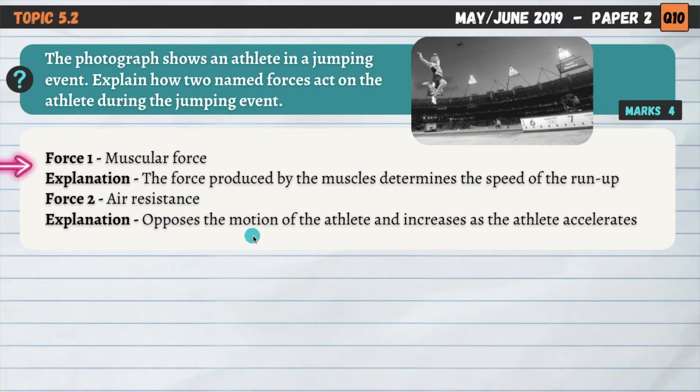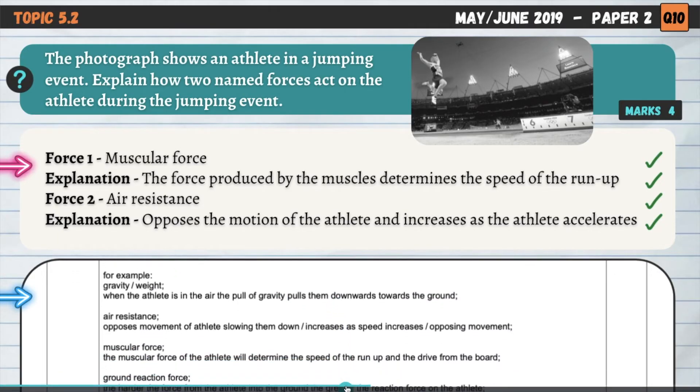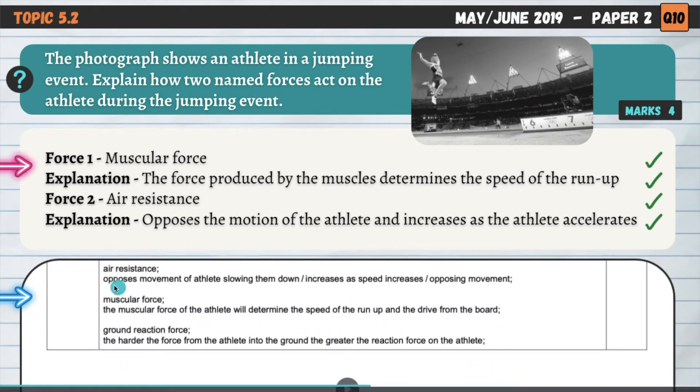That's one way in which muscular force is going to act upon their performance. The more muscular force we produce, the greater the speed that we can generate during the run-up. So it's just one example from long jump that demonstrates the importance of muscular force. And then air resistance, this opposes the motion of the athlete and it increases as the athlete accelerates. So that's another way of explaining how that force impacts the long jumper. As they speed up or accelerate during that run-up, that air resistance is going to increase as well. We could have also gone for gravity or weight, and the other one was ground reaction force here as well. So the harder the force from the athlete into the ground, the greater the reaction force on the athlete.